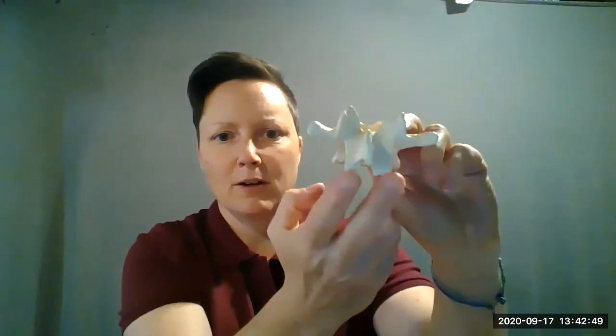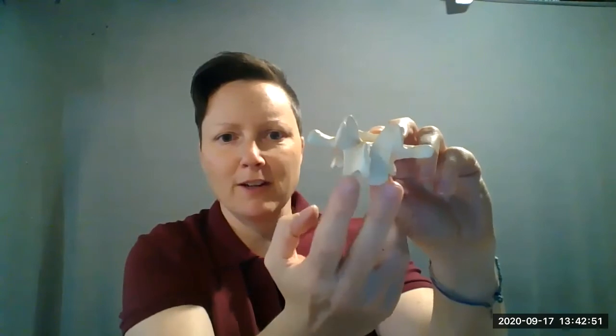And then there's a lumbar vertebra which looks like this. I think that one looks like a moose. So there's the moose with its kind of big face, and then its bulging nose, and then its antlers and its ears. Okay, so cervical, thoracic, and lumbar vertebrae.